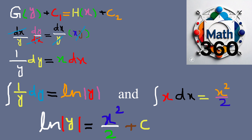We have the equation: the natural log of the absolute value of y equals x squared over 2 plus c. This is the combined form of the constants — we could express c as c2 minus c1 from integrating each side separately, but it is simpler to keep it as one constant.